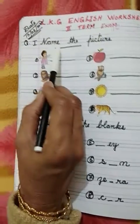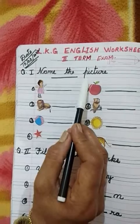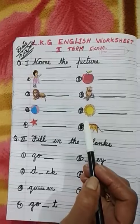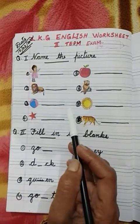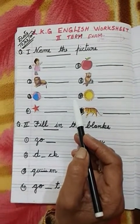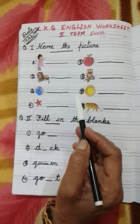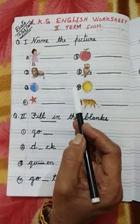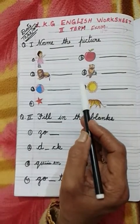Question number 1: Name the pictures. We have been given some pictures. What do we have to do? You have to write the correct name of the picture in the answer sheet. First, we will identify the pictures and write their names. We don't have to draw the pictures — just write the answers in your answer sheet.